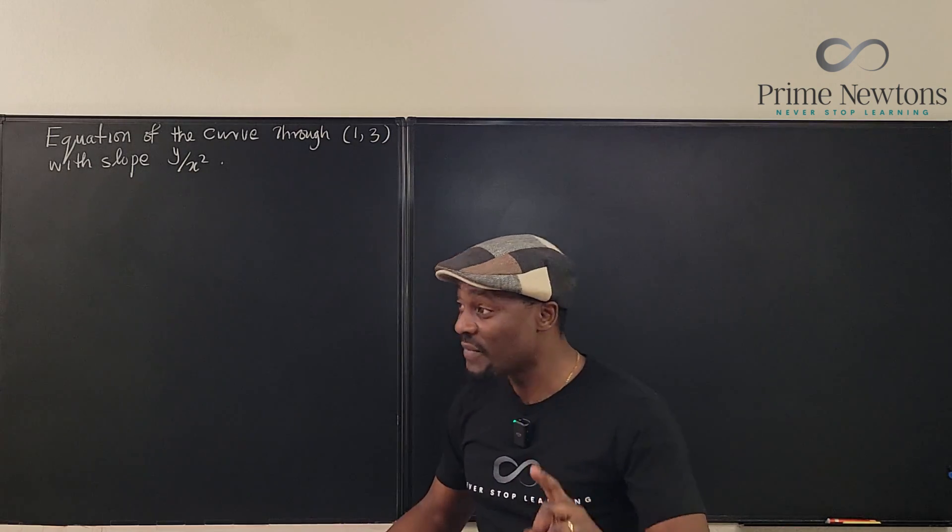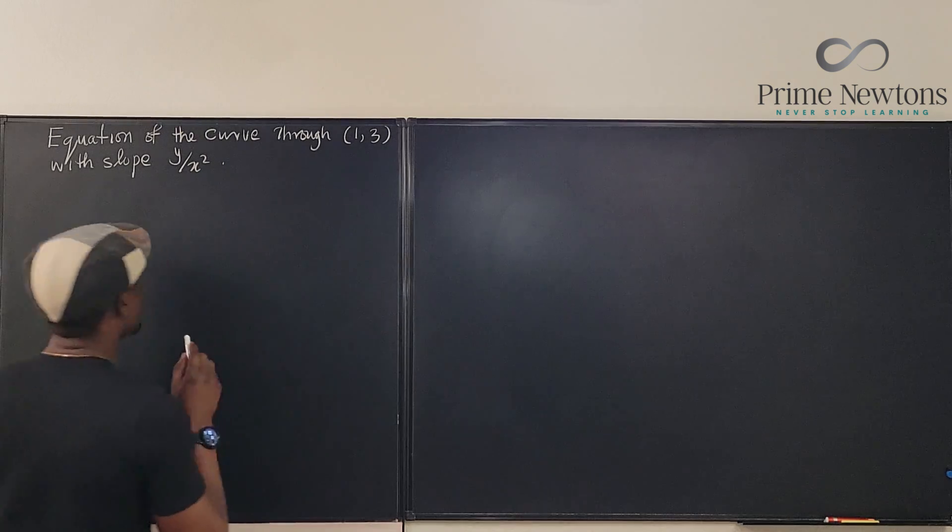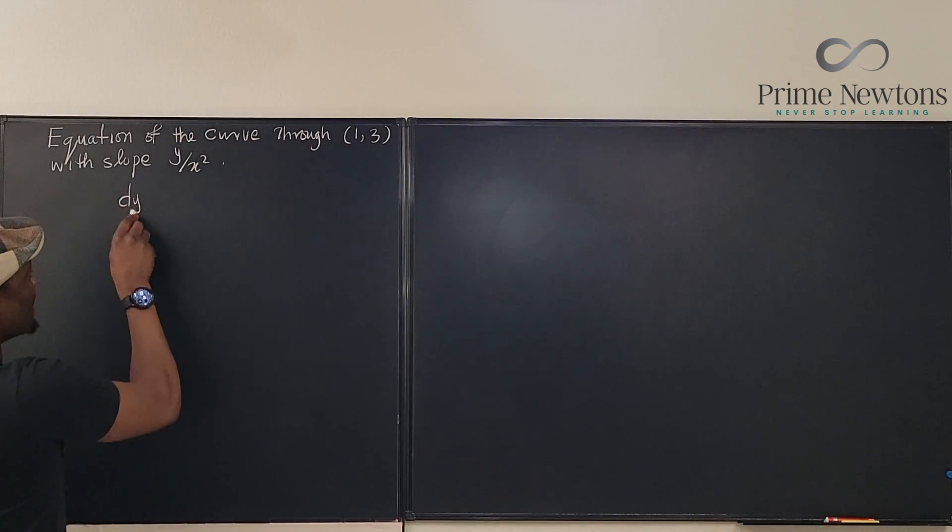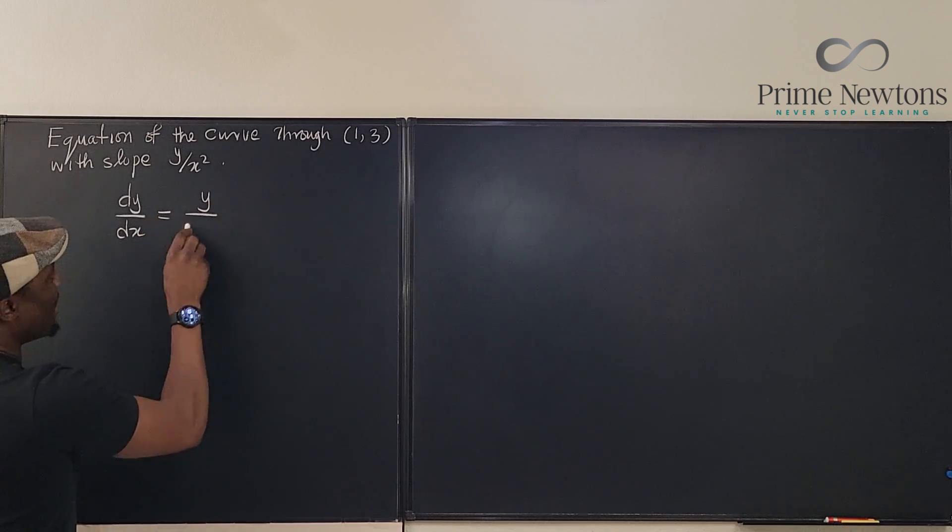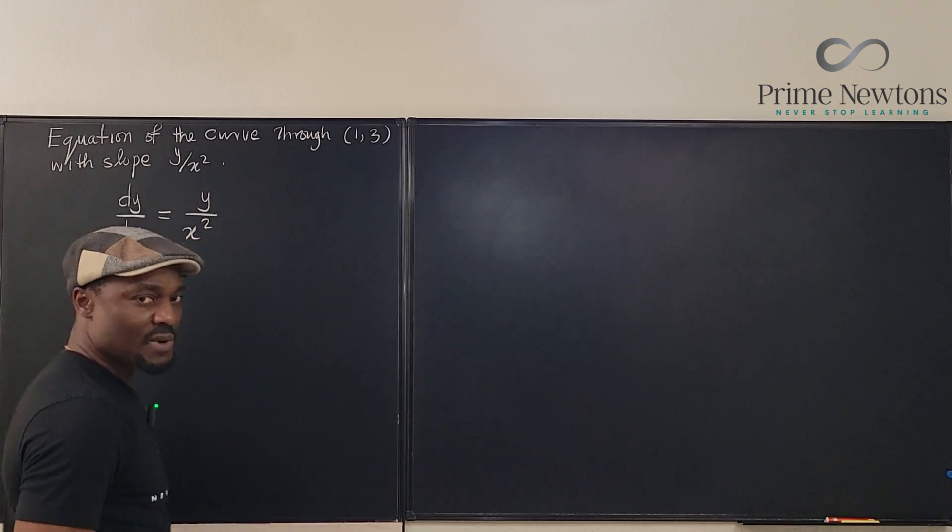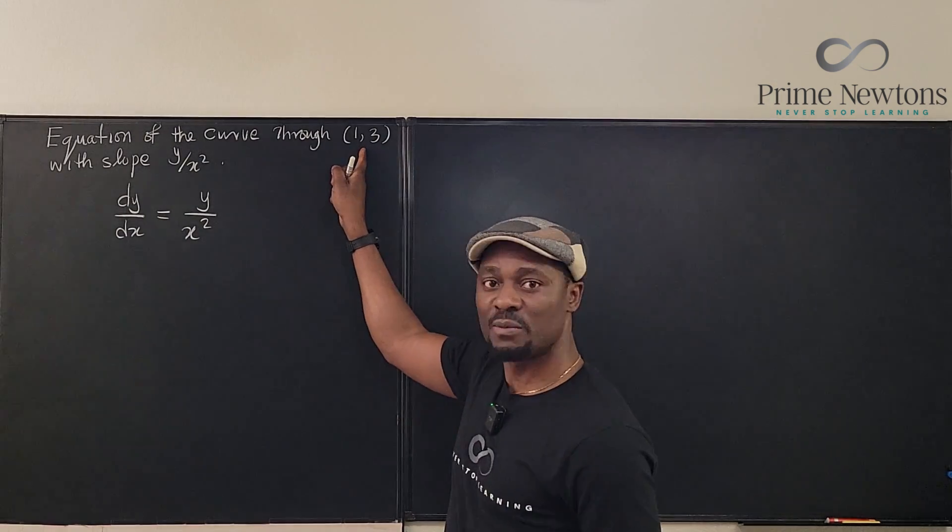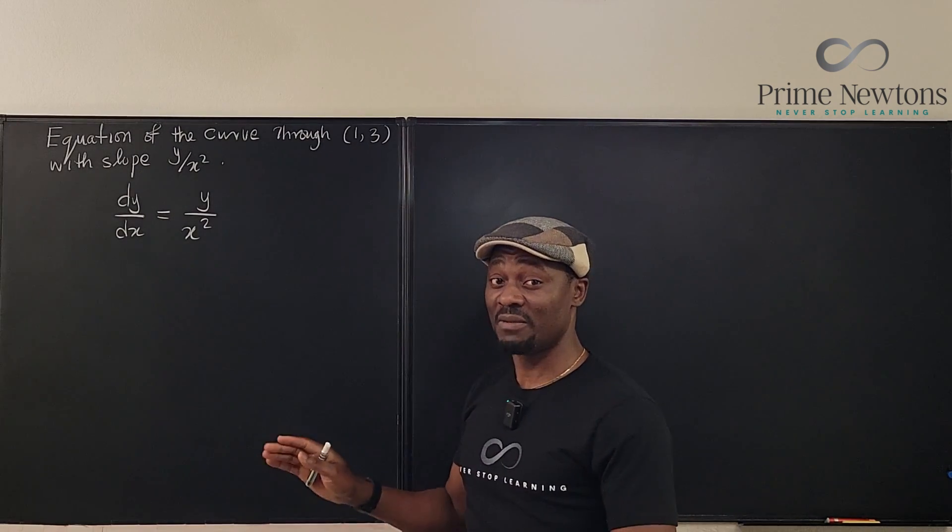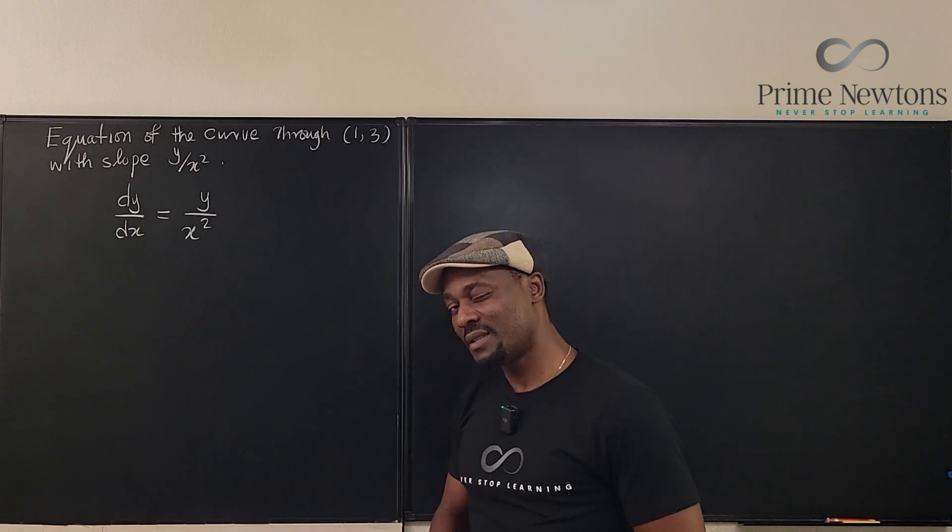The only thing we know is that the slope of this is y over x squared, which sounds like this: dy/dx is y over x squared. That's the only information we have, and it passes through this point. These two pieces of information are sufficient to find the answer. Let's get into the video.